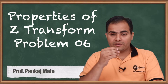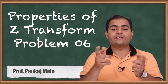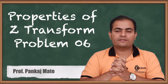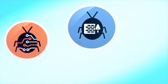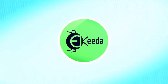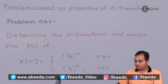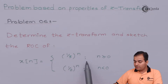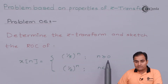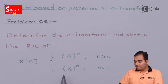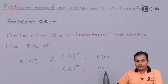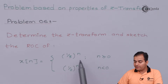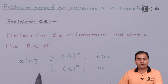In this question I have placed two different values available on different sides of n. Problem number 6: determine the Z transform and sketch the ROC of X(n). The sequence is given as (1/3)^n when n ≥ 0, which gives a right-handed sided ROC, and (1/2)^n when n < 0, that is from minus infinity to minus 1. We have to obtain the Z transform first and then move on to the ROC.